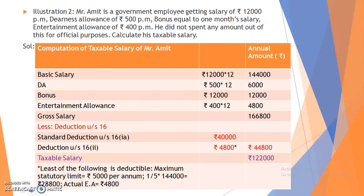Basic salary is Rs. 12,000 per month, converted annually equals Rs. 1,44,000. DA is Rs. 500 per month, multiplied by 12 equals Rs. 6,000 annually. Bonus is equal to 1 month's salary, so it is taken as Rs. 12,000. Entertainment allowance is Rs. 400 per month, converted annually equals Rs. 4,800. The gross salary will be Rs. 1,66,800.